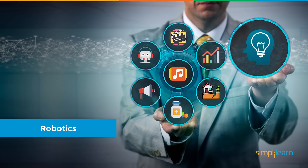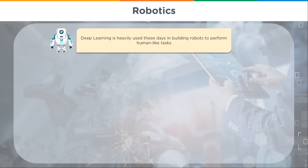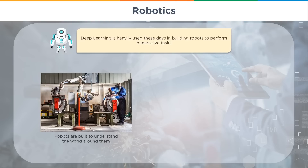Robotics is one of the most exciting areas. Previously you'd have to spend four to ten thousand US dollars to buy your own robot and start programming it with neural networks. Now it's around two thousand dollars and continuing to fall — there are even kid robots and robotic hands that are much cheaper. Deep learning is heavily used to build robots that perform human-like tasks and understand the world around them.